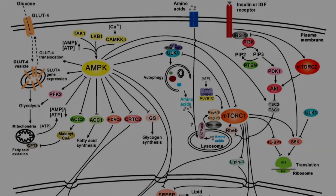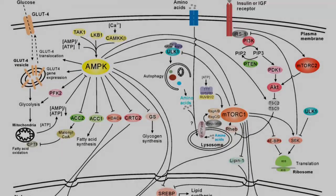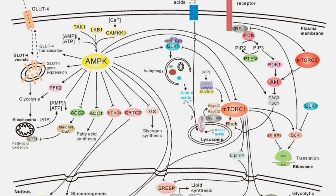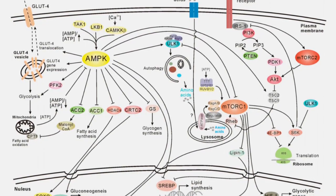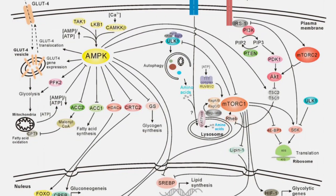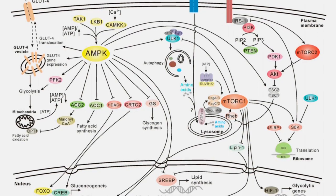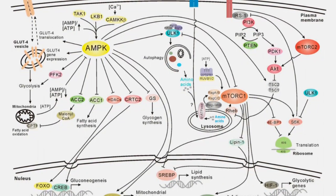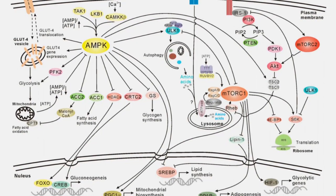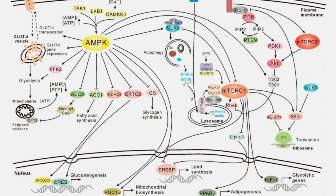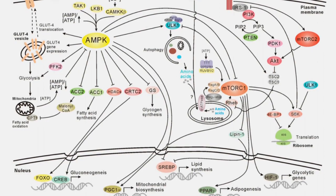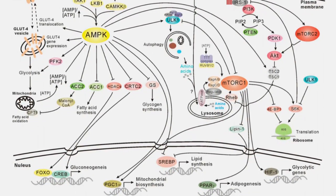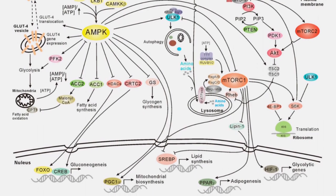Deregulated nutrient sensing refers to the disruption in the body's ability to accurately sense and respond to nutrient availability. Within our cells there are specific nutrient sensing pathways responsible for detecting the availability of nutrients such as glucose, amino acids and fatty acids. Key pathways involved in this process include mTOR, AMPK, MAPK and insulin IGF-1 signaling pathways.